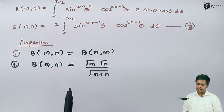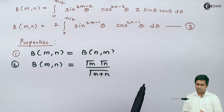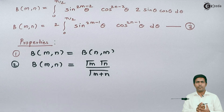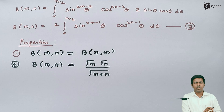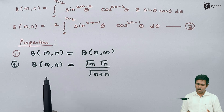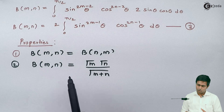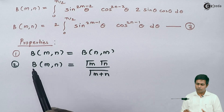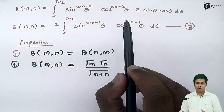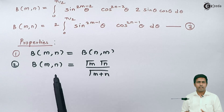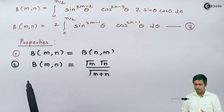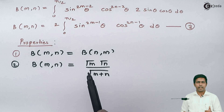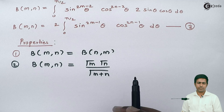This second property is very useful for solving many problems based on the beta function. Whenever we want to evaluate the beta function, we use this property because we know how to evaluate the gamma function. Instead of using integration every time, we use property 2 to get the answer in fewer steps.